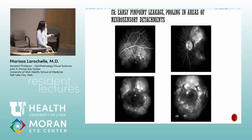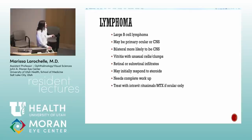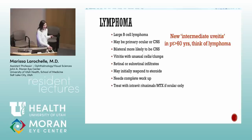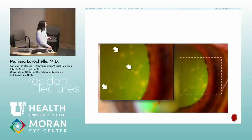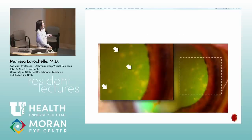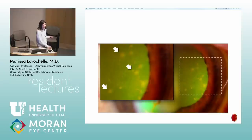VKH on FA shows pinpoint leakage that pools in areas of neurosensory detachments. Vision can be 20/400 and after high-dose prednisone at two days it can be 20/30 — remarkable response. Lymphoma: always think of it in intermediate uveitis in a 65-year-old or older patient with a first bout of intermediate uveitis. Chronic endophthalmitis: an IOL with particulate debris stuck on it — think P. acnes. Recurrent inflammation years after surgery that temporarily responds to steroids and keeps coming back — treat like endophthalmitis: tap and inject, often needs lens removal.